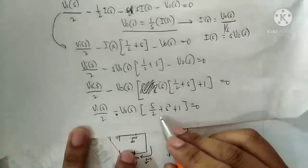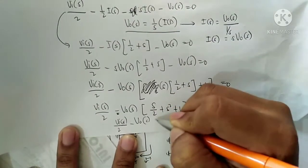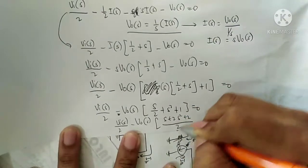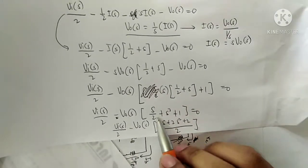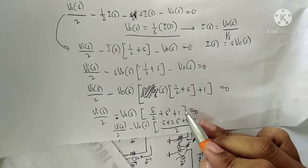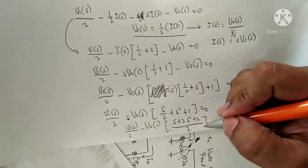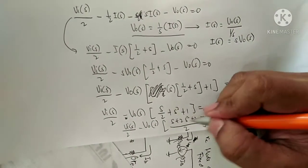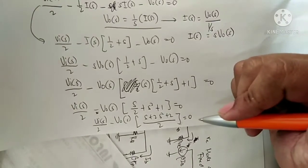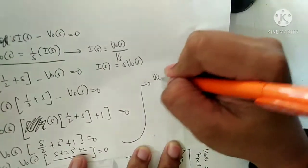We can simplify further using a common denominator. Vi over 2, as a function of S — so this will be S plus 2, S-squared plus 2, divided by 2 — that is the common denominator. Multiply everything: so multiply by 2 over 2. Simplifying, therefore the final equation is: Vi as a function of S divided by 2, minus Vo(S) — factor — and distributing.